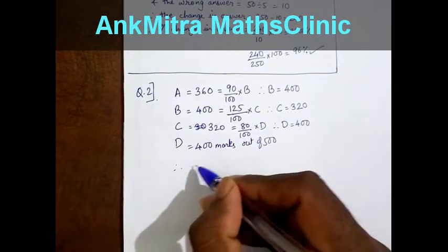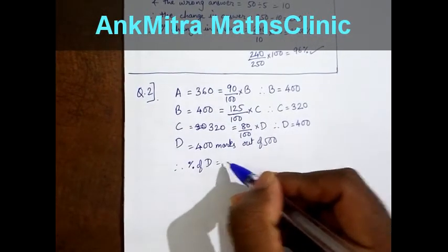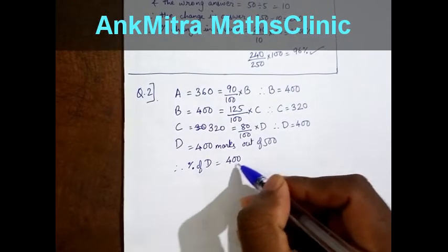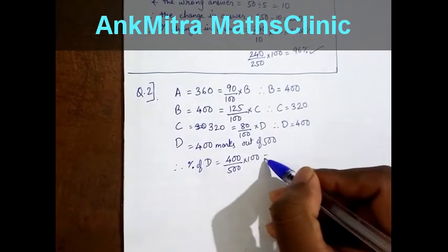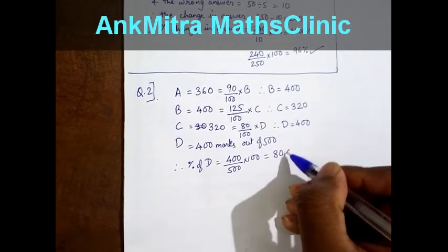Therefore percentage of D is equal to 400 upon 500 multiplied by 100 which comes to 80%.